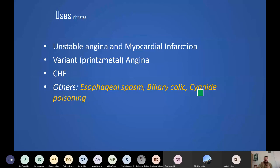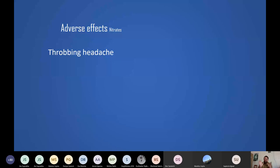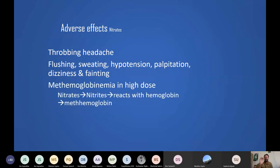Adverse effects of nitrates: first and most importantly — throbbing headache. Do not just write 'headache'; write 'throbbing' or 'pulsatile headache' — this is a specific, significant adverse effect unique to nitrates. Other adverse effects include flushing, sweating, hypotension, and palpitations — all due to the vasodilatory reaction.